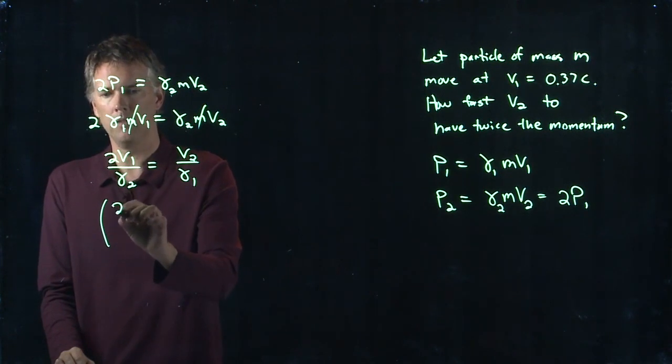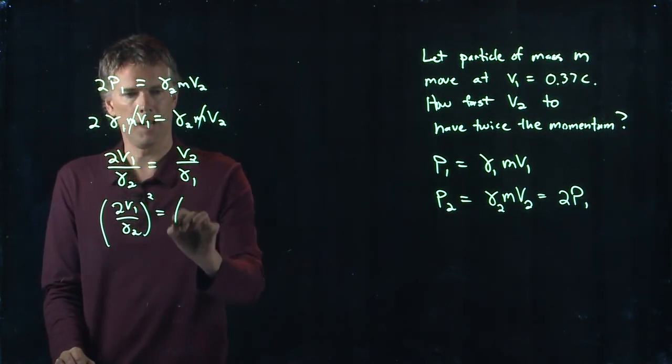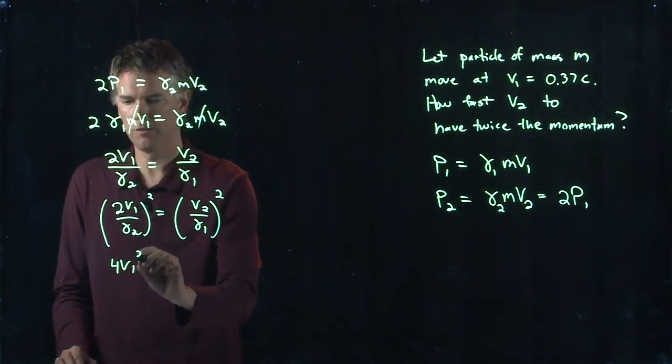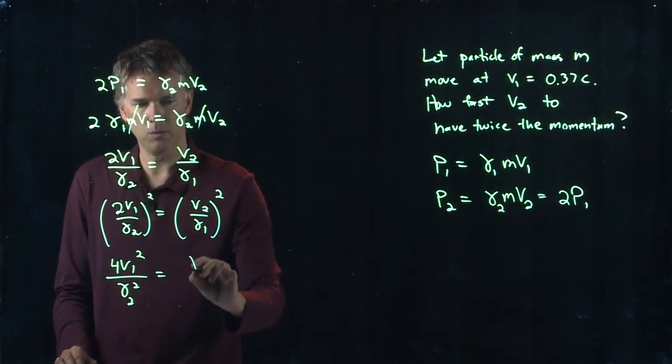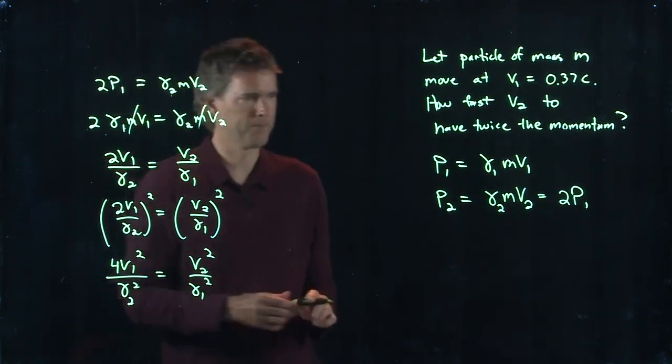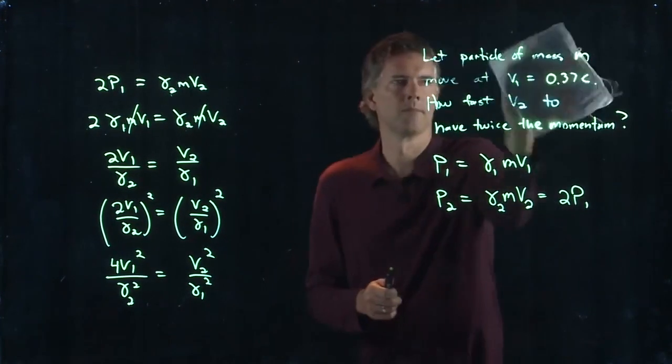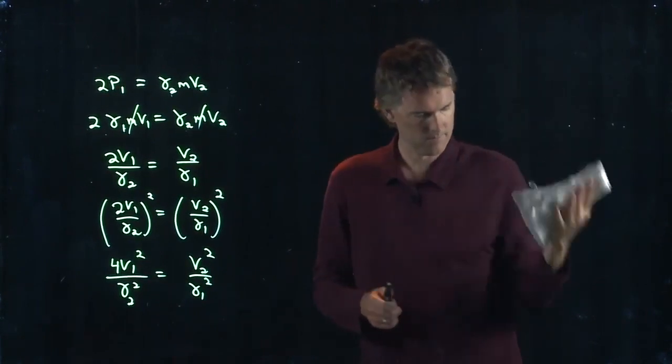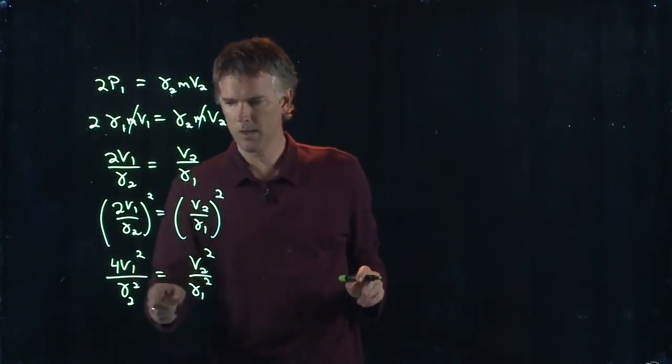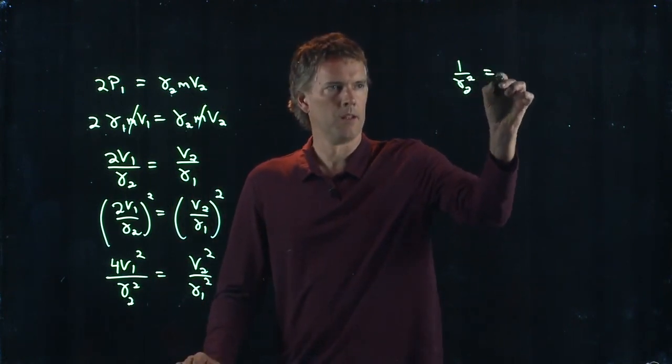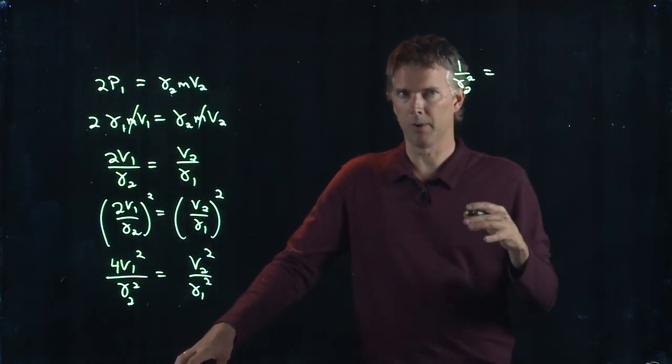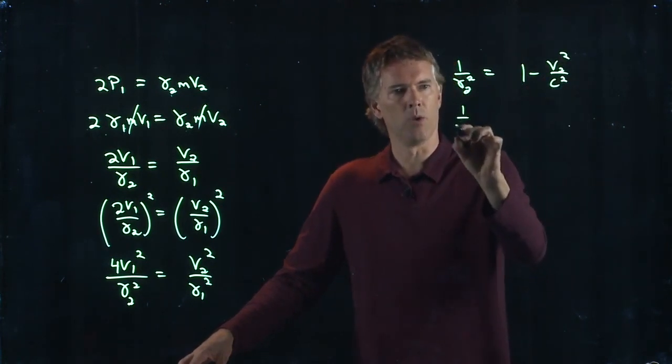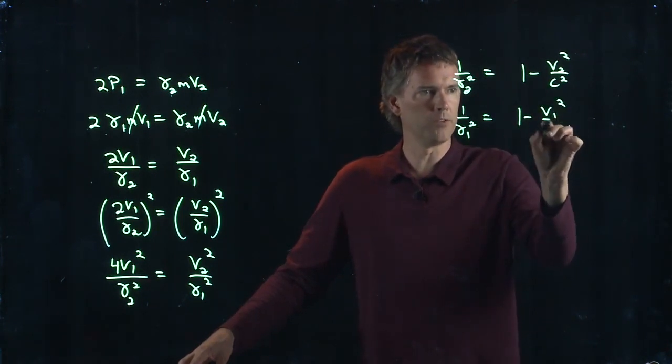So if I square this and I square this, what do we get? We get 4 v1 squared over gamma 2 squared equals v2 squared over gamma 1 squared. But we know that gamma 2 squared is 1 over the square root of 1 minus v squared over c squared. So 1 over gamma 2 squared has to be 1 minus v2 squared over c squared. 1 over gamma 1 squared is going to be 1 minus v1 squared over c squared.